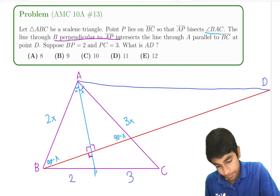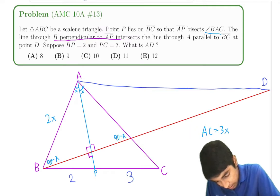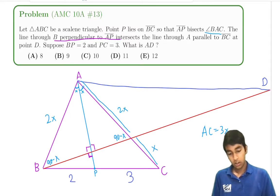So that means that we know that the whole thing, you know, AC is equal to 3X, but we know that just this part is 2X, right? And that means this remaining part is X.